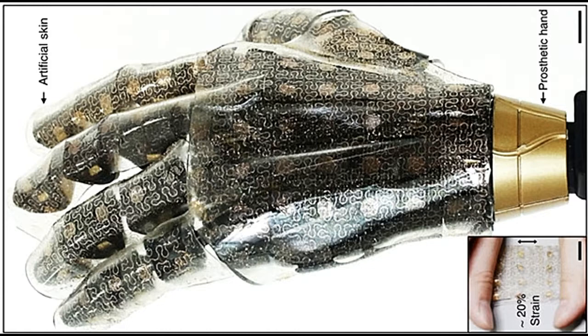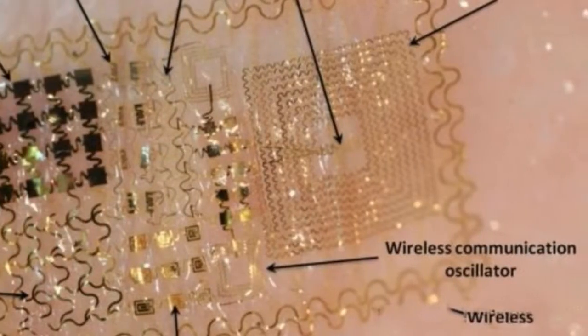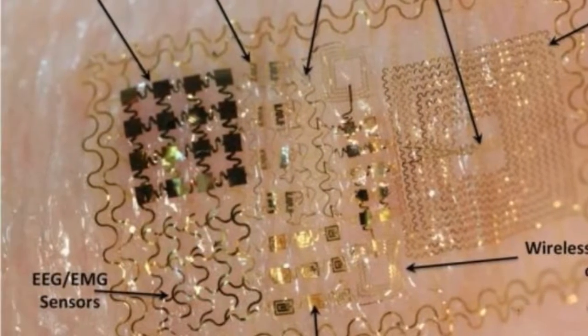It is easy to envision these stretchable electronics being woven into clothing to monitor human health on a continuous basis. Applications could also include smartphones and other devices including TVs, with flexible smart screens, smart wallpaper and drapes, and for any other purpose where stretchable and bendable electronics might be useful.